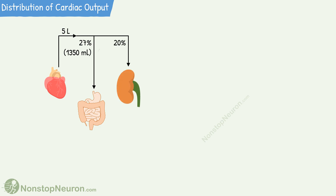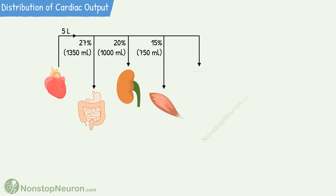20%, or about 1,000 milliliters, goes to the kidneys. 15%, that is 750 milliliters, goes to the skeletal muscles. 13%, or 650 milliliters, goes to the brain.